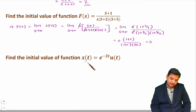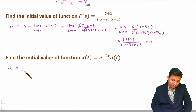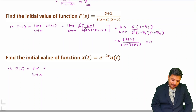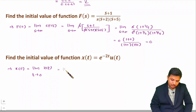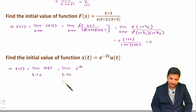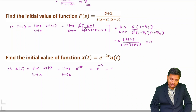When the function is given in the time domain, the initial value f(0) is found using limit t tends to 0 of f(t). Here x(t) = e^(−2t), so x(0) = e^(−2·0) = e^0 = 1. The initial value of this function is 1.